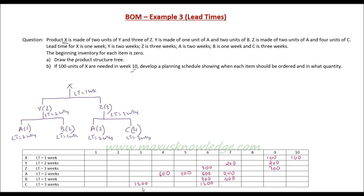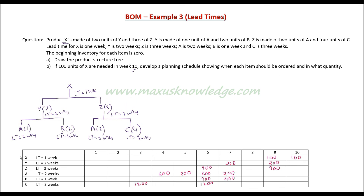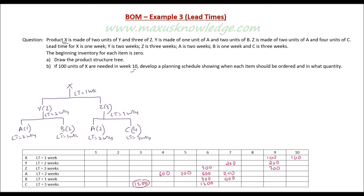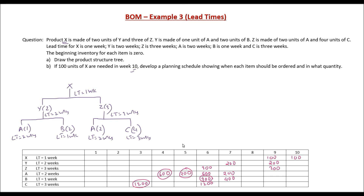So the ordering plan is: C must be ordered in week 3 for 1200 units; A must be ordered in week 4 for 600 units and in week 5 for 200 units; B must be ordered in week 6 for 400 units. These are the procured items — A, B, and C — and this schedule shows the quantity and time to order each. This is how you create your planning schedule.